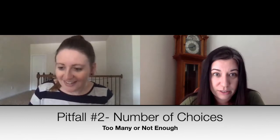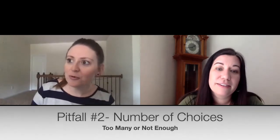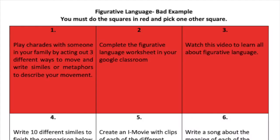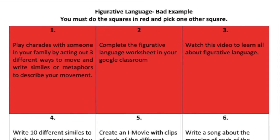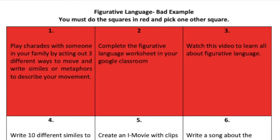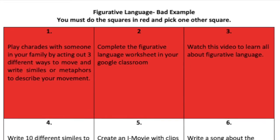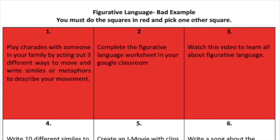Our next pitfall is too many choices or no choices. I have seen a kindergarten choice board with 25 choices — that is a lot for a five or six year old to make. 25 can be a lot for middle or high school too, but it's definitely too many for lower grades K through 2. On the other end, I've seen boards where you must do the squares in red and pick one other square — so you're actually not giving them many choices. You're really just saying do these three things and pick one more.